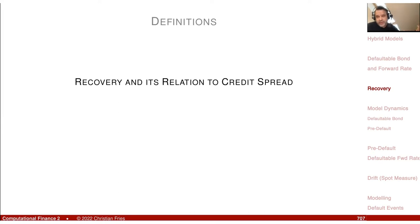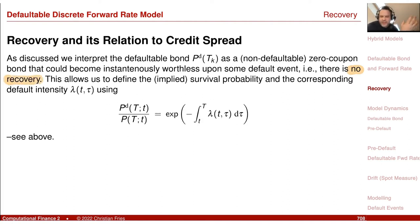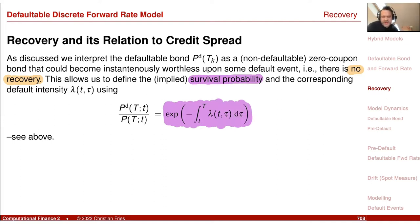For the very simple defaultable bond, we assume zero recovery — either we get one at maturity or we get nothing. We can use our defaultable zero-coupon bond and make the assumption that it becomes instantaneously worthless upon default: it jumps down to zero with no recovery. Under this assumption, we can interpret the ratio of the defaultable bond with zero recovery and the non-defaultable bond as a survival probability.